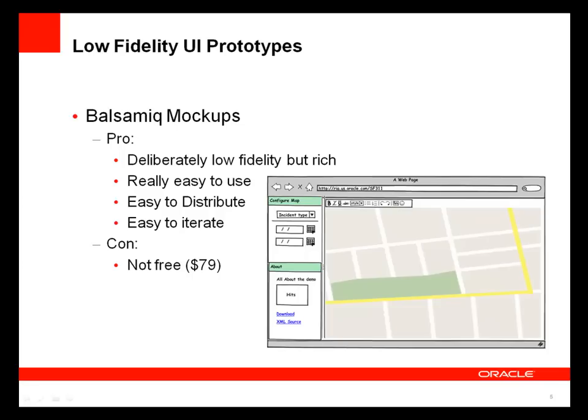Balsamiq is very easy to use and is not free but relatively inexpensive at $79. It gives you the ability to drag in different types of components. You can see the Chrome for a web page, an estimation of what a map might look like, a toolbar, navigation components with different types of input styles, a date picker, a dropdown, and some links. You can see very quickly how you could design a site, a page, or part of a page using Balsamiq.